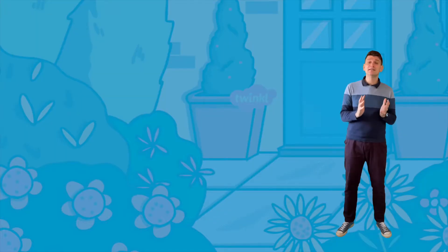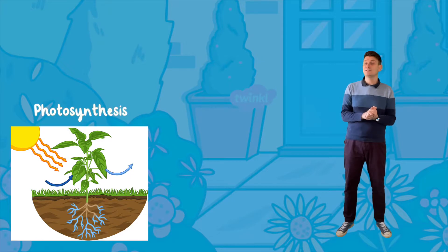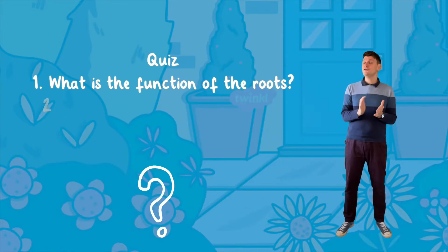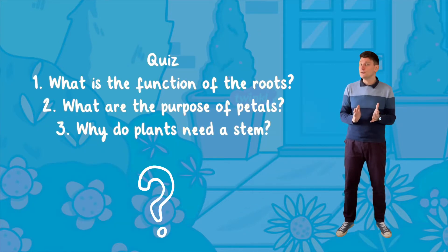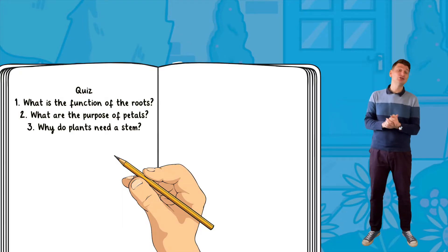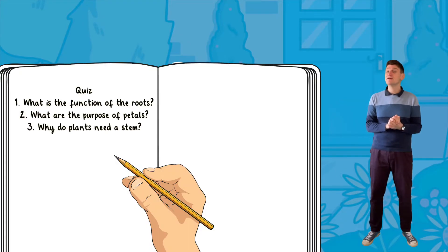This PowerPoint is also an ideal way to introduce a topic or to lead into a lesson on photosynthesis or the life cycles of a plant. After you've used the PowerPoint with your children, why not challenge them to a quiz by asking them questions about the different parts of a plant — or better yet, get your children to generate the quiz questions. A great way to assess their understanding of the topic.